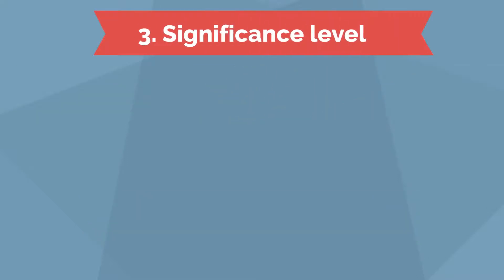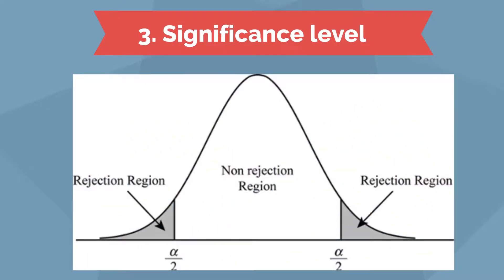The third step in hypothesis testing is specifying the significance level. When the test statistic has been calculated, two actions are possible: we reject the null hypothesis or we do not reject the null hypothesis. The action we take is based on comparing the calculated test statistic to a specified possible value. The comparison value we choose is based on the level of significance selected. The level of significance reflects how much sample evidence we require to reject the null.